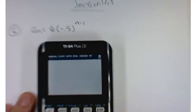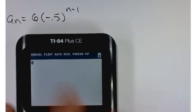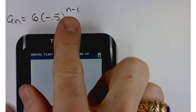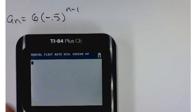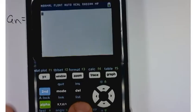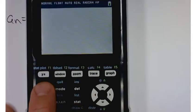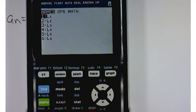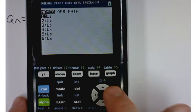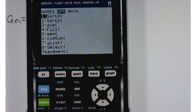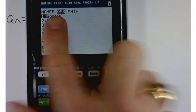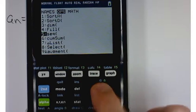If you wanted your calculator to do it, if you're too lazy to plug in one, two, three, four, five for N, then go to the list button. Do second and then list and then over to ops. One of the things you'll see, the fifth option down, is for sequences. So second and then the stat button, which takes you to the list menu, and then over to ops, down to sequence.